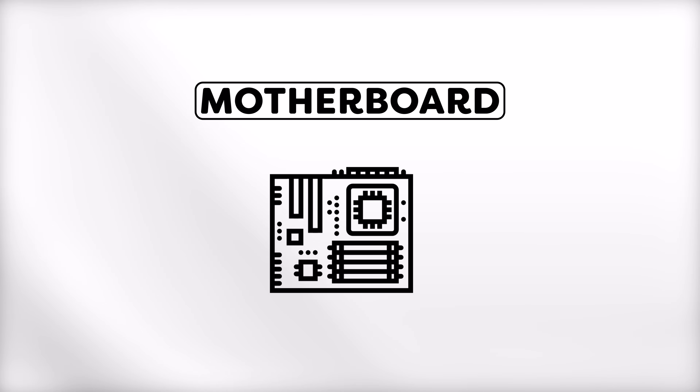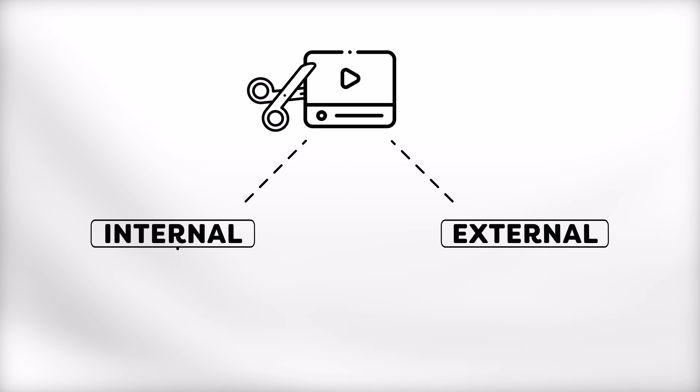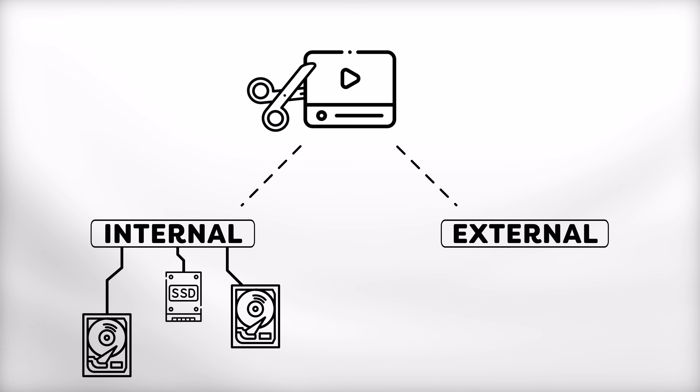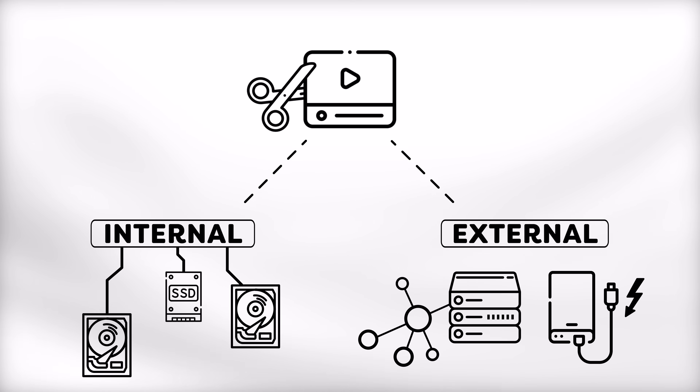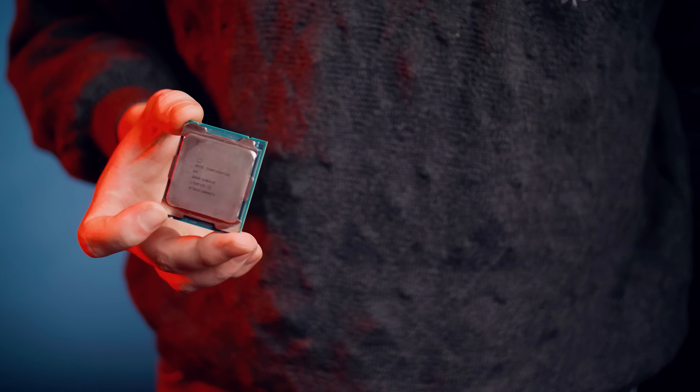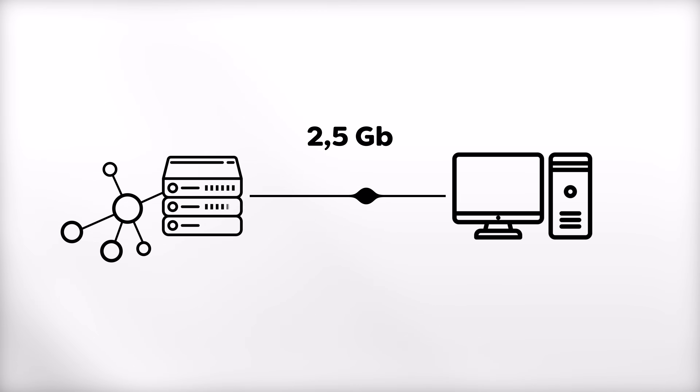Now for the motherboard, it mostly comes down to the features you need. Are you going to edit from internal or external storage? If internal, make sure you have plenty of connections for hard drives or SSDs. If external, consider whether it's a network server or a Thunderbolt-connected drive — Thunderbolt also requires processor support, and Intel CPUs generally work a little better with it. For network storage like a Synology NAS, look for a fast Ethernet connection, either 2.5 or 10 Gigabit.